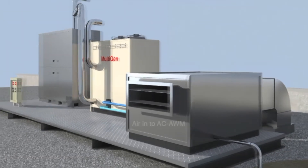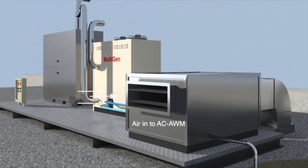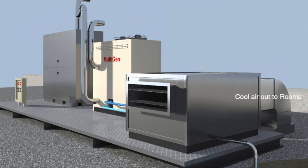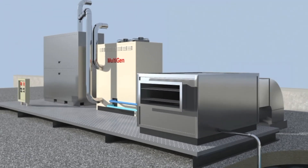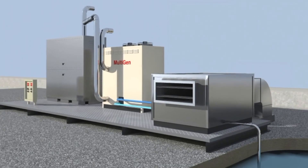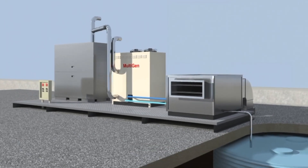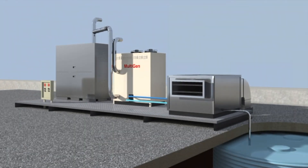The air water maker in turn is processing atmospheric ambient air and collecting the moisture, and in the process is providing cool air suitable for air conditioning. This cool air is the byproduct and result of making water from the atmosphere. The water is stored for future usage.